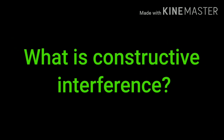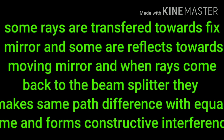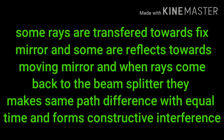Let's understand constructive interference first. FTIR has two mirrors — one fixed mirror and one moving mirror, both at equal distance. When infrared light hits the beam splitter, it splits the beam rays. Some rays travel towards the fixed mirror and some are reflected towards the moving mirror. When the rays come back to the beam splitter, they travel the same path distance in equal time and form constructive interference.